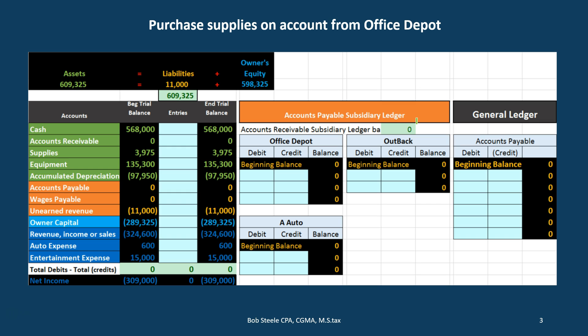The subsidiary ledger is not going to be for every type of account. Many types of accounts we will go through one by one to determine what added things we need to make them more effective than just the general ledger. In this case, we need to back up accounts payable with the subsidiary ledger, which will be organized by — we call them vendors. Usually they're called vendors.